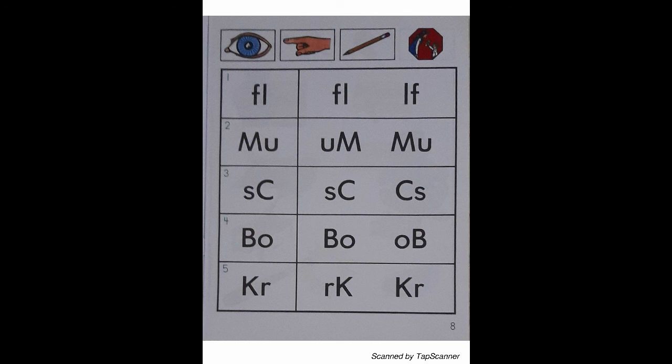Page 8, consonance and association. Look at the letters in row 1. Place your finger on the box in row 1. With your pencil, circle the letters on the right that are the same as the letters in the box at the left.